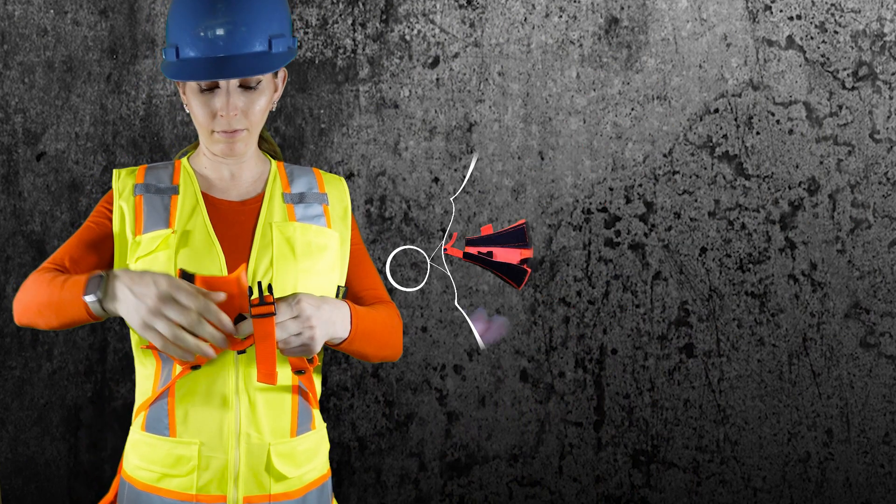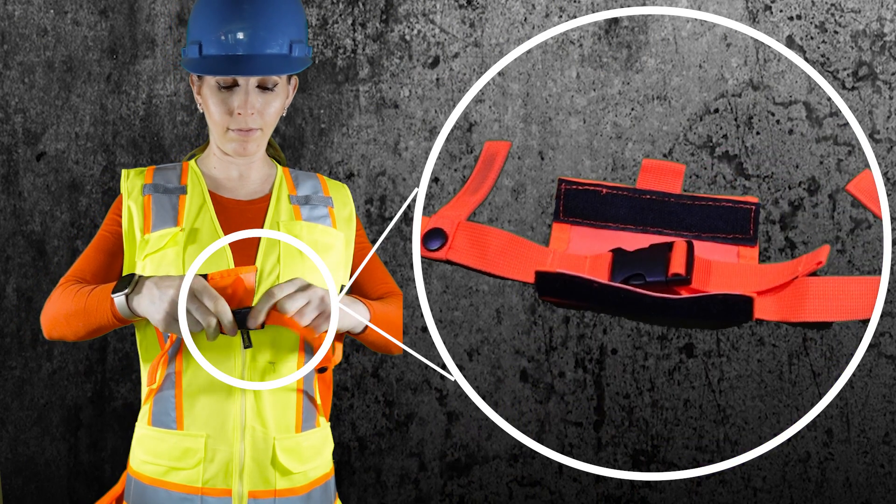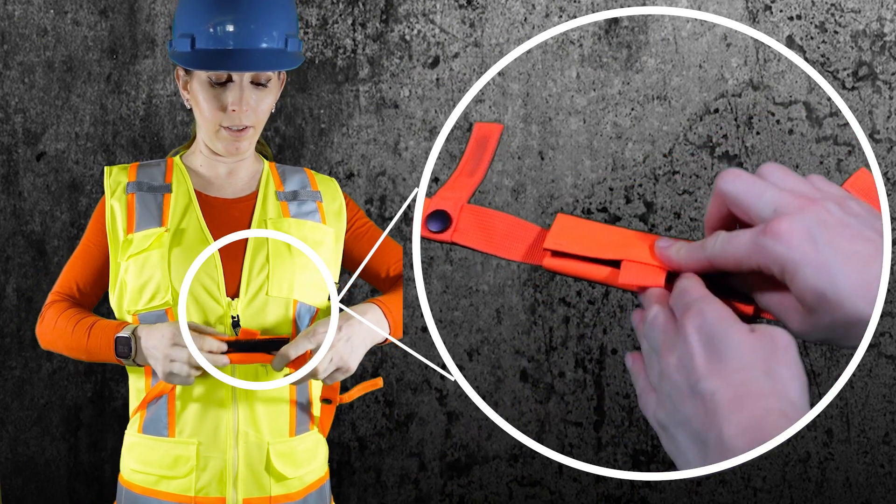Next, attach these two bands around your waist with a quick side release buckle. Cover the side release buckle with the attached hook and loop cover.